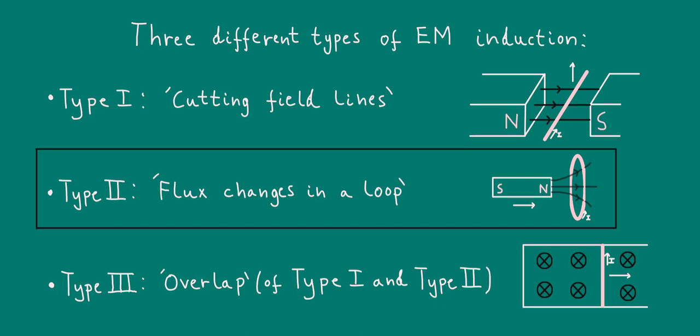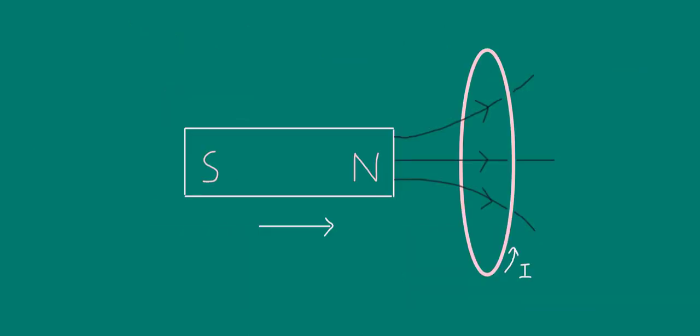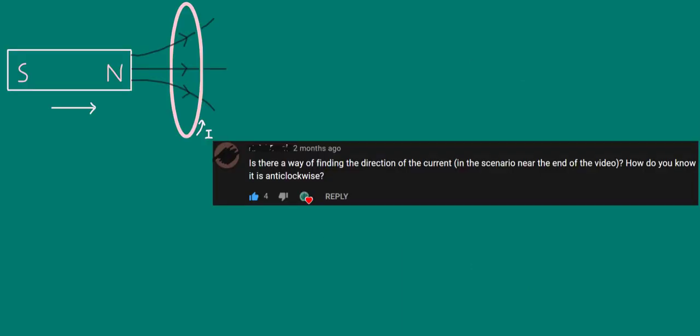This will help us reinforce our understanding of Lenz's Law. A previous video discussed the induced EMF and current that develops in a coil of wire when a magnet is pushed into it. A viewer left an interesting question in the comments, asking how we knew that the induced current would flow anticlockwise, as shown in the diagram.